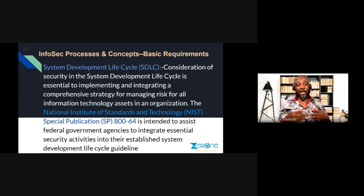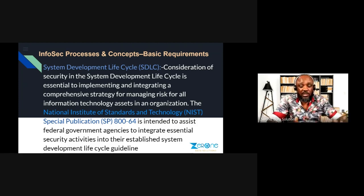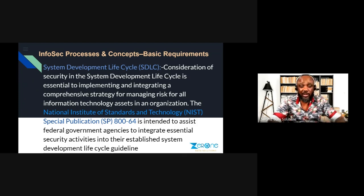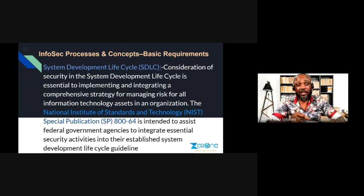The System Development Life Cycle talks about the process of acquiring software or hardware. For example, before you get a new phone, you decide whether you're going to get the latest model or a lower-end one based on your budget. You might consider switching to Android, getting a flip phone, or not getting one at all. All these considerations are part of the initialization process.